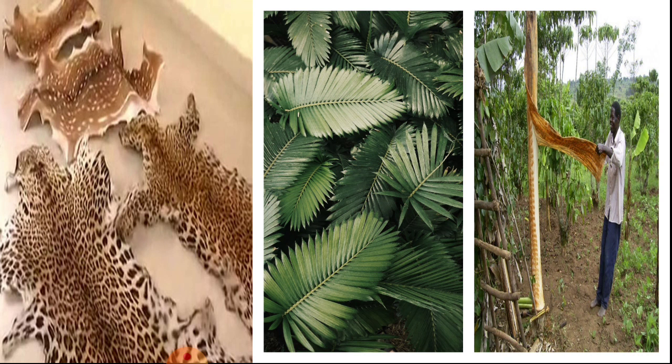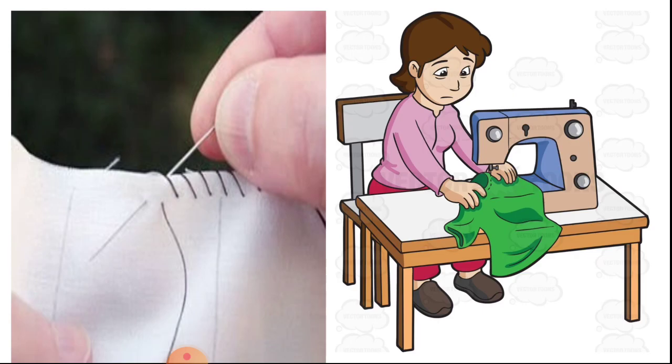How were these clothes made? When there was no invention of cloth, long long ago when humans lived in caves, early humans used to wear animal skin, leaves, and bark of trees to cover their body.